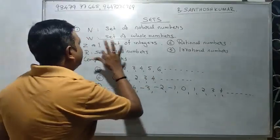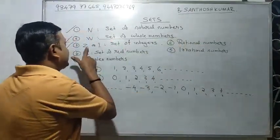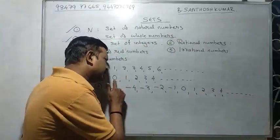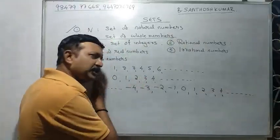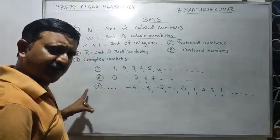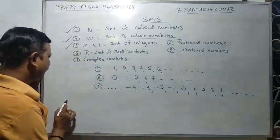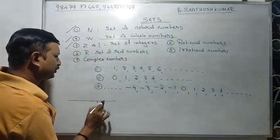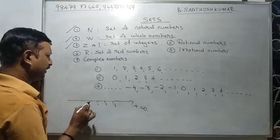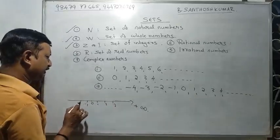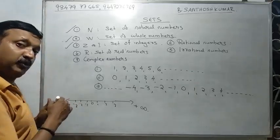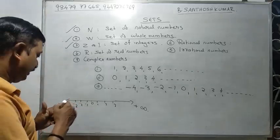The set of integers also includes negative numbers — negative one, negative two, and so on, extending to negative infinity.